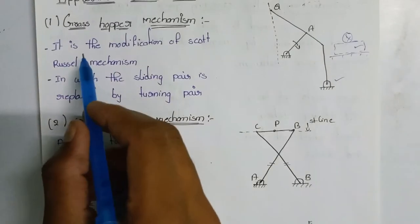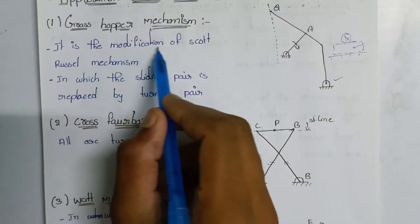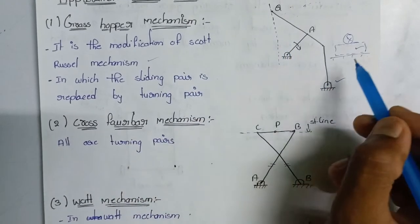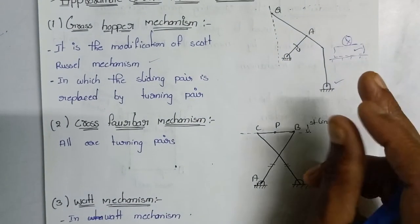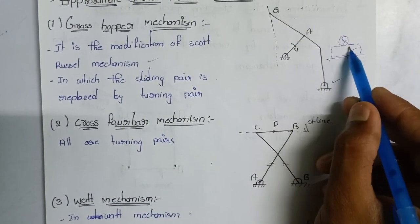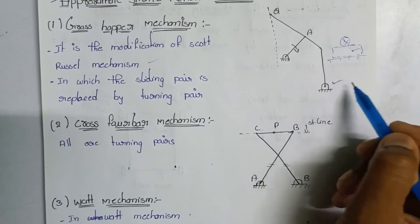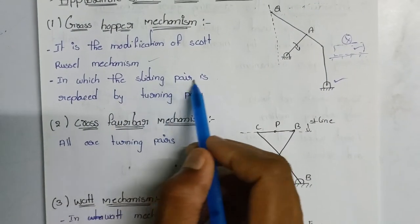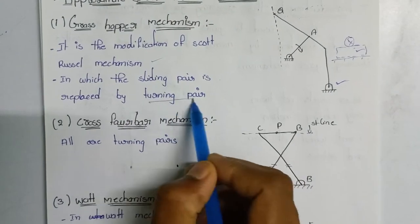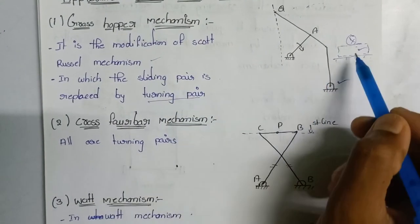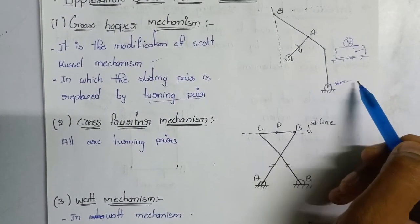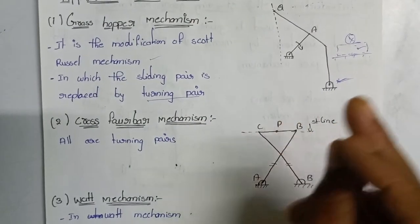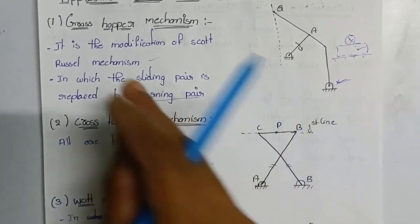This is a modification of a lever-based mechanism. This is a small modification of the sliding pair — this is a turning pair. This is a grasshopper motion mechanism.